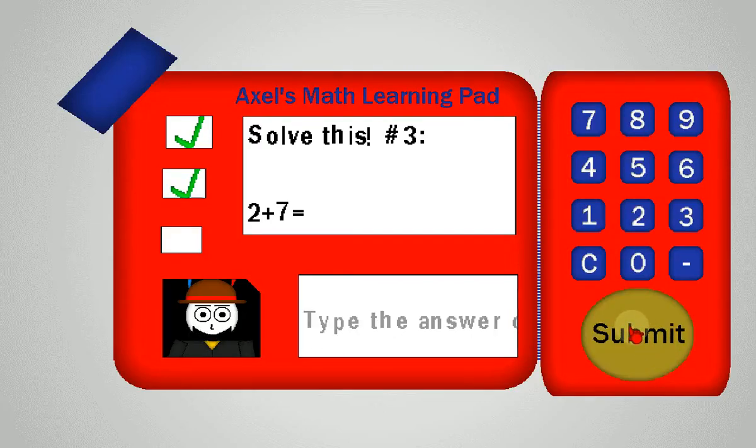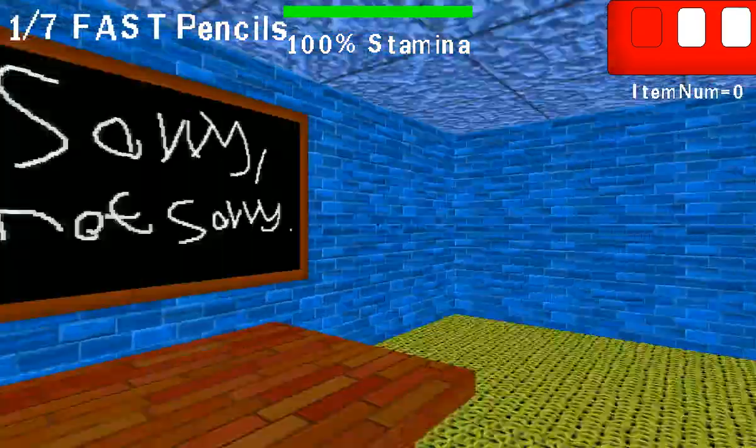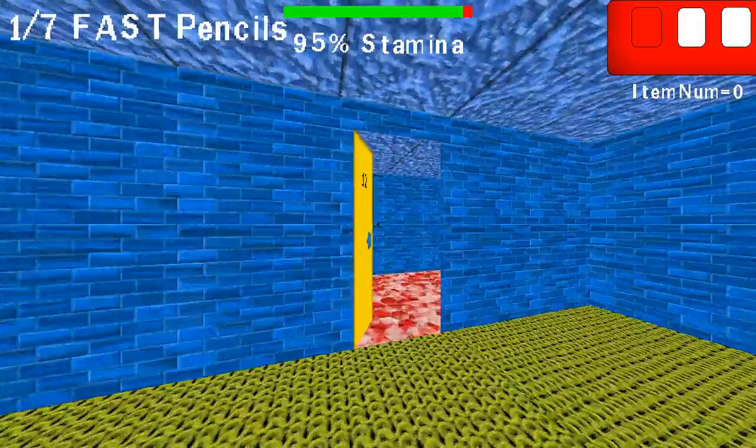Here is problem 3. 2 plus 7. That's a great answer. You did good. Here is a dollar.